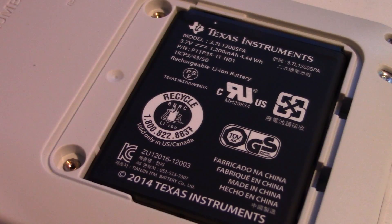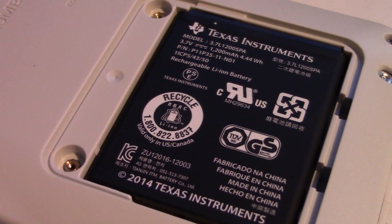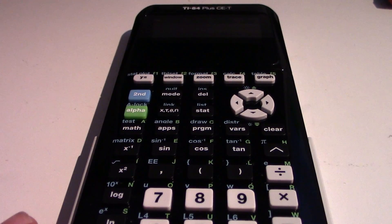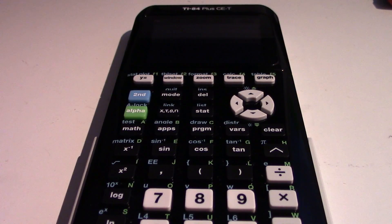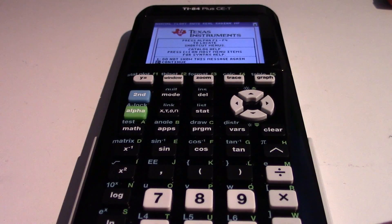The battery of the calculator is a 1200 mAh lithium-ion battery, so that should last for a pretty long time. And the screen of the calculator is very, very nice. If you turn it on, you can see that it has a bright backlit color LCD.